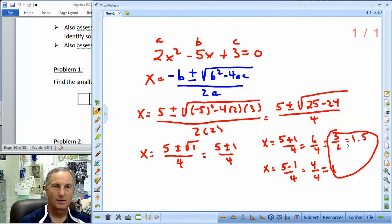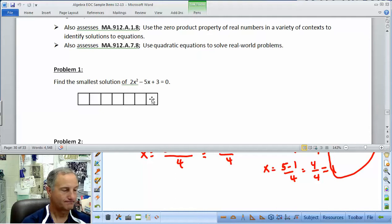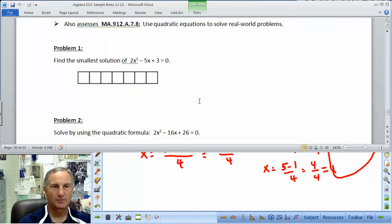25 minus 24 is 1. The square root of 1 is 1. So we got 5 plus or minus 1 over 4. Remember, that's two solutions. We have 5 plus 1 over 4. That's 6 over 4, which simplifies to 3 over 2. 5 minus 1 over 4. 4 over 4. We get 1. So there are our answers right there. And it said, what's the smallest solution? 1.